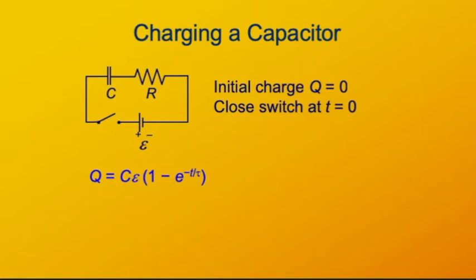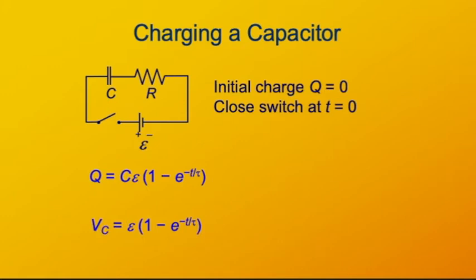The charge has a maximum value of the capacitance C times the voltage E. That's the charge at infinite time — after infinite time there is no current, so the voltage across the resistor is zero and the voltage across the capacitor equals the source voltage. Functionally, the charge rises as one minus e to the minus t over tau. The voltage across the capacitor is directly proportional to the charge — that's the capacitor relation — so the two functions are directly proportional. Since charge equals capacitance times voltage, the voltage equals charge divided by capacitance.